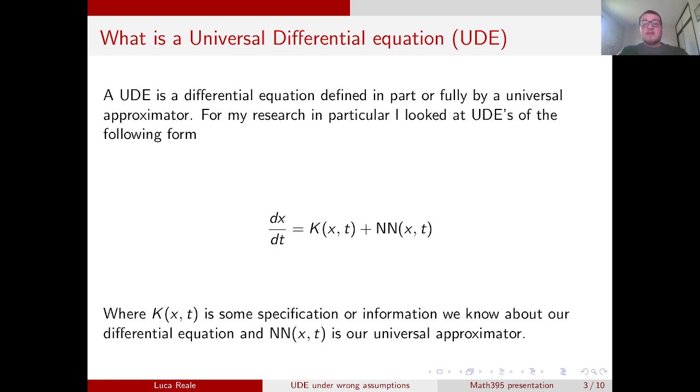For my research in particular, I looked at UDEs of the following form: dx/dt equals some specification k, dependent on x and t, plus our universal approximator, in our case a neural network. Our specification doesn't necessarily have to be correct, and we will look and see how incorrect specifications affect model performance.